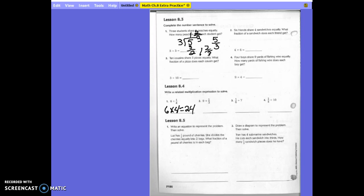Write an equation to represent the problem, then solve. 1 third pound of cherries. She divides the cherries equally into 2 bags. What fraction of a pound of cherries is in each bag? So what's our first problem going to say? She has 1 third pound and she's going to divide that into 2 bags. What fraction of a pound? That's going to equal n.